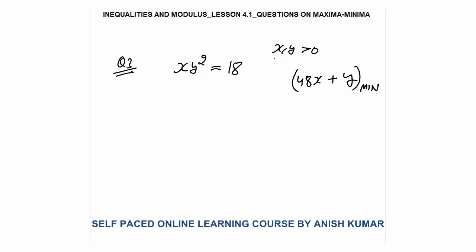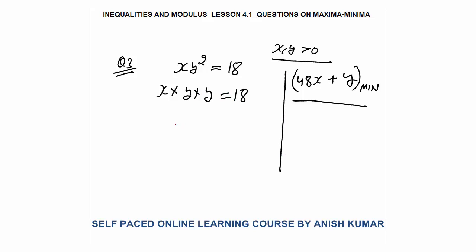First, break it as x × y × y = 18. If you take the sum right now, the product of three numbers is constant, but their sum is 2y. I need the sum of the two y-terms to be just y, so each term must be y/2. Dividing both sides by 2 × 2 = 4 gives 18/4.